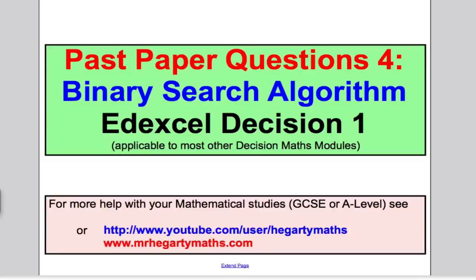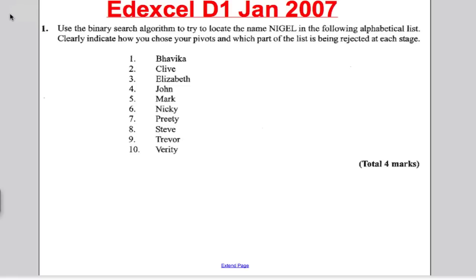Hi there and welcome to another video where I go through the past paper questions on the binary search algorithm. This will help you in your revision for the Edexcel D1 exam but would help with any decision maths A-level modules. For more help with your GCSE and A-level, see my YouTube channel and website. Let's start off by looking at a question. As always with these, pause the video, work through the question, and then mark your work against mine.